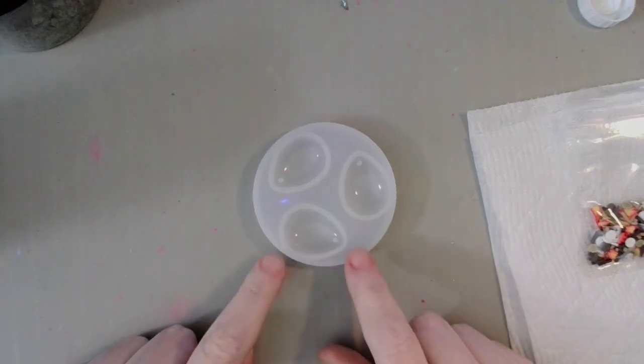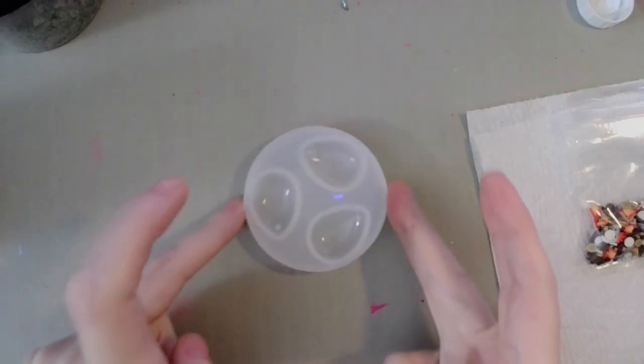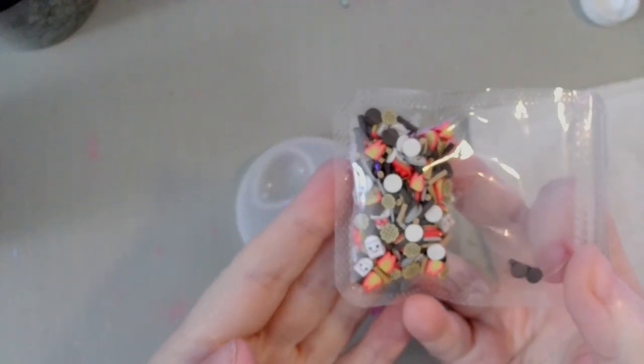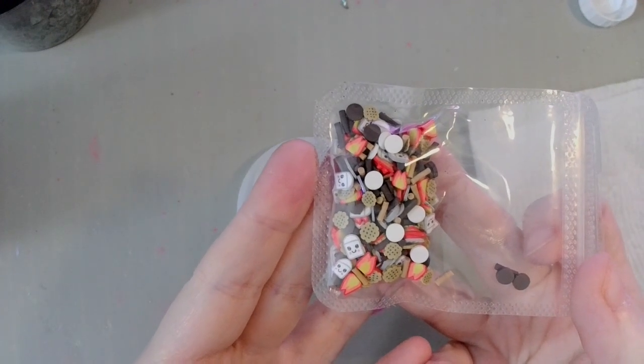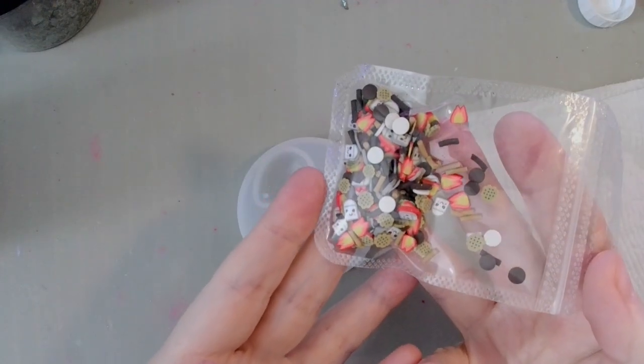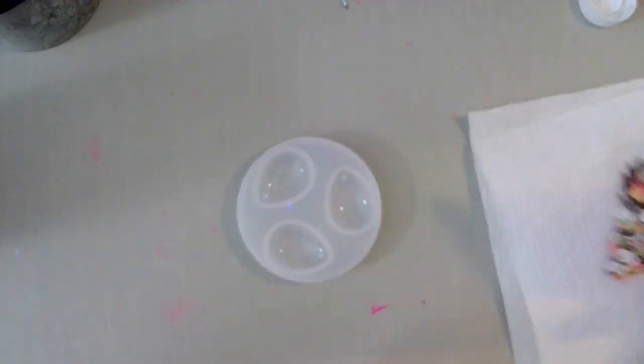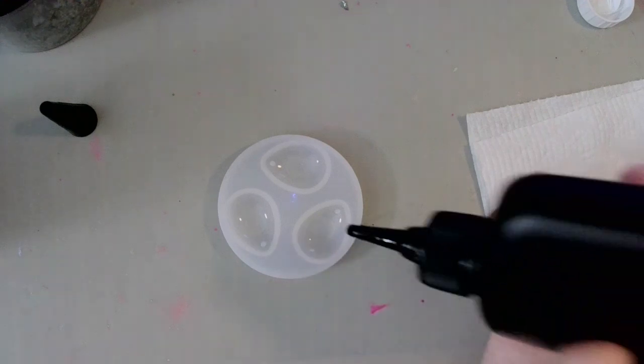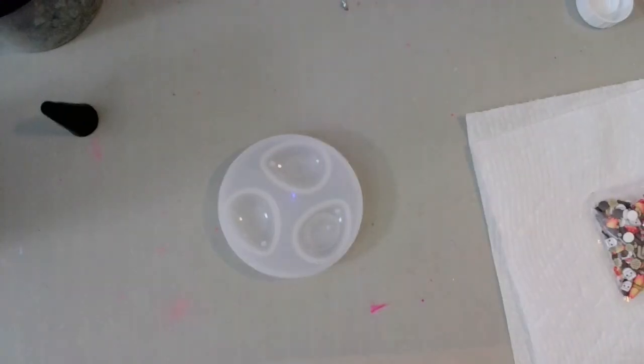Hey guys, welcome back! Just a cute quick little UV resin project today. This is my teardrop cabochon mold from BB Craft. These are some super adorable cute little s'mores polymer clay slices that I've had for a long time, and I figured this would be a cute little autumn fall camping project. I'm going to be using my UV resin. So what I'm going to do first is just make a tiny layer just to give it a base.